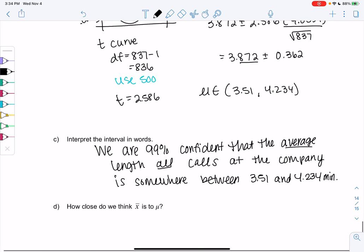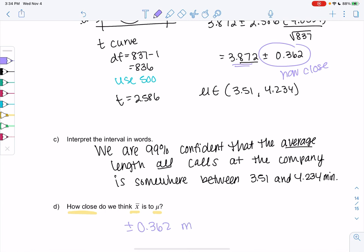Back to our big question of the chapter: how close is x̄ to μ? Our x̄ was 3.872. How close do we think we are to the real value? That again is the plus minus piece. We think we're within plus or minus 0.362 minutes of the real value. That's the margin of error. As that number gets smaller, as our margin of error gets smaller, we're making better and better predictions.